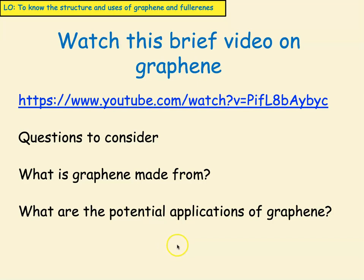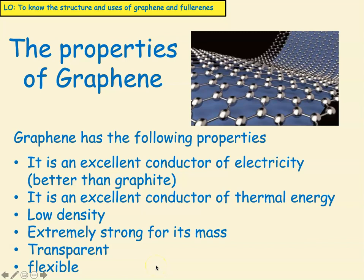To summarise the properties of graphene: it is an excellent conductor of electricity, much better than graphite. It is an excellent conductor of thermal energy. It has a low density, so it's very light. However, it's extremely strong for its mass — stronger even than steel. Because it's only one layer thick, it's transparent, and it's extremely flexible.